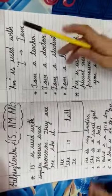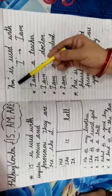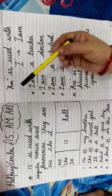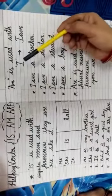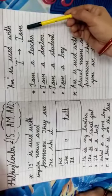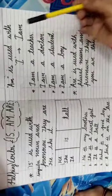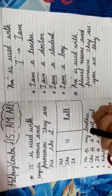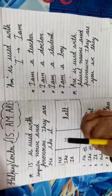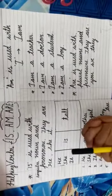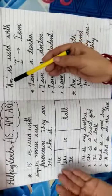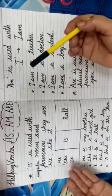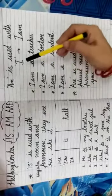Now let's move on to another one. Am. Am is used with I. I and am are best friends. It is a thumb rule that I is always used with am. Not with he, she, it. You can't use am with he, she, it. Am is the best friend of I.